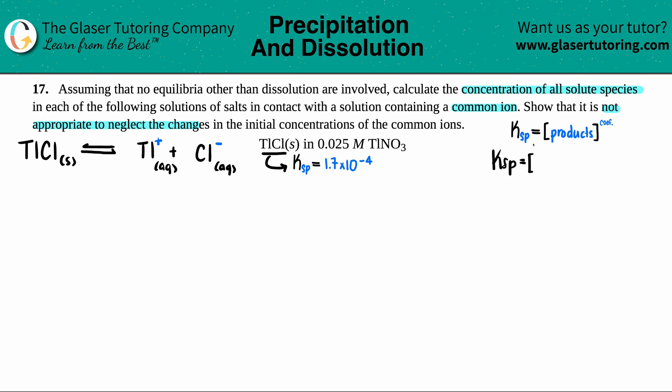Ksp would be the concentration of Tl⁺ times Cl⁻. They're both raised to their coefficients, but I only have one of each. It's a one-to-one, so I don't have to raise anything because anything raised to the first is itself.